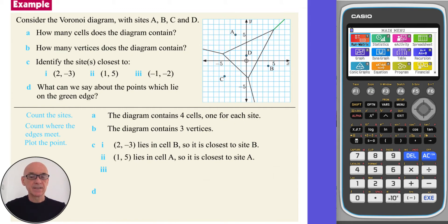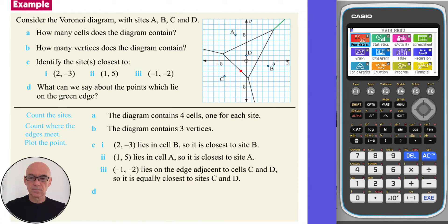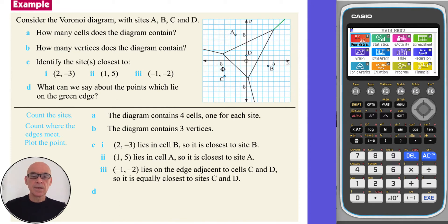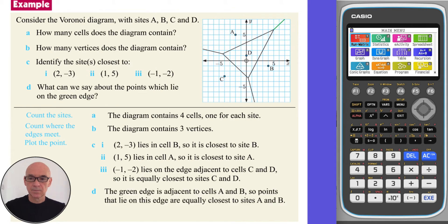Finally, plotting (−1, −2), we see that (−1, −2) lies on the edge adjacent to cells C and D, so it is equally closest to sites C and D. In part D, the green edge is adjacent to cells A and B, so points that lie on this edge are equally closest to sites A and B.